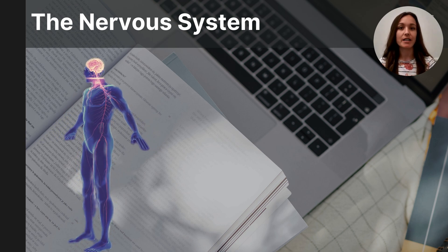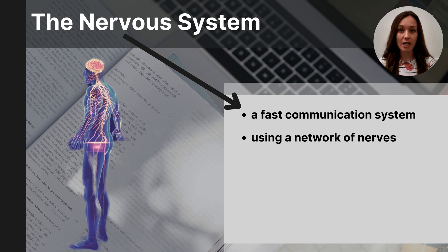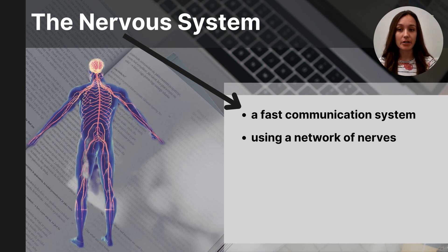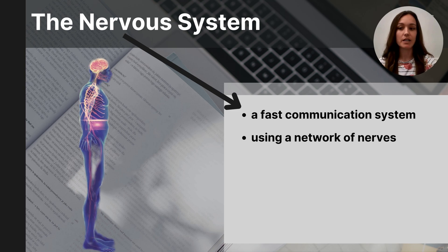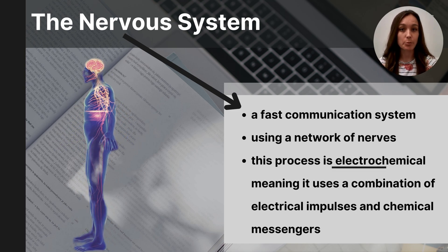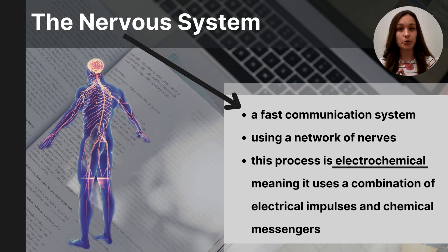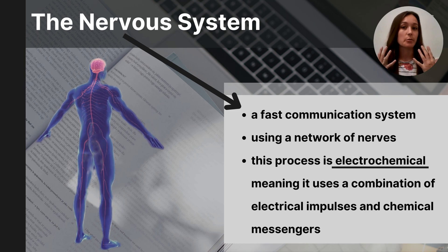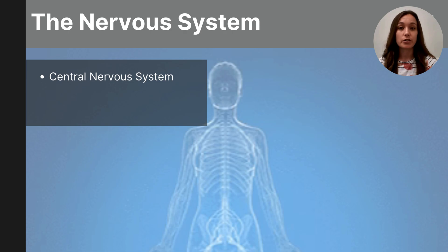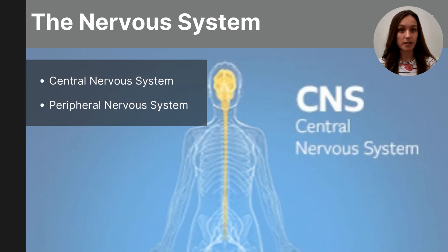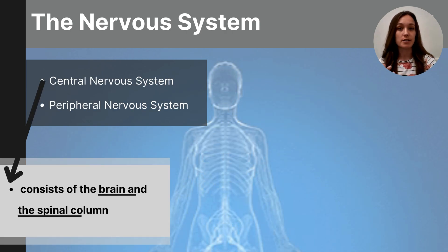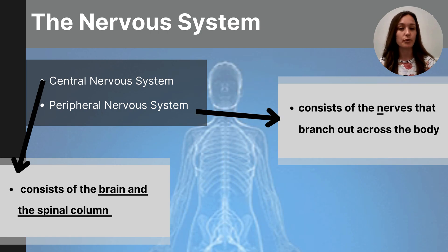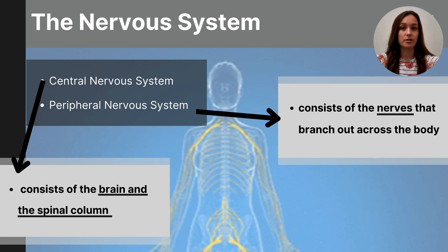The nervous system is a communication network in the body. It is very fast and uses a network of nerves that stretch from the brain out to all parts of our body. The nervous system uses an electrochemical process of electrical impulses and chemical neurotransmitters to communicate messages from the brain to the body and vice versa. It is broken up into two subsystems: the central nervous system, consisting of the brain and spinal column, and the peripheral nervous system, consisting of the nerves that branch out from the spinal cord to the ends of our body.